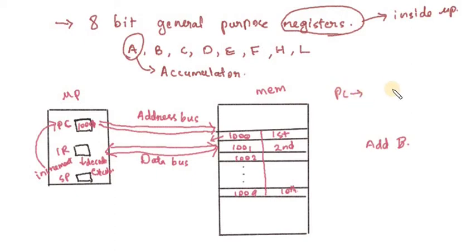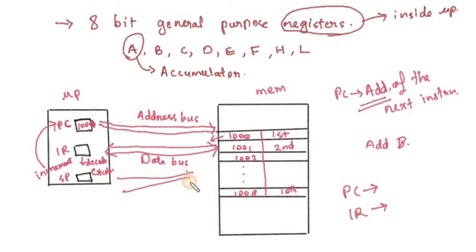The address of the next instruction is also important. Address of the next instruction, current instruction. IR contains the instruction. And there will be one more bus called control bus for read or write.